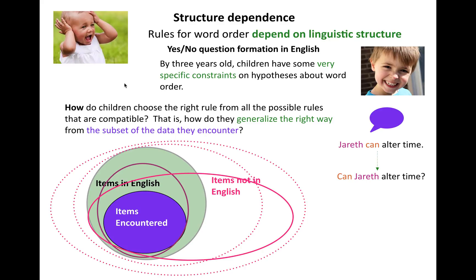What we know, based on Crane and Nakayama in 1987, is that by three years old, children seem to have some very specific constraints on hypotheses about word order — in particular, how they form complex yes-no questions in English. The rules for this seem to depend on linguistic structure.